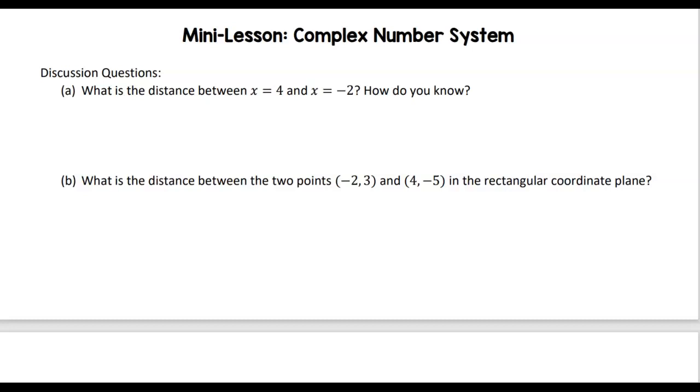So let's just start basic here. If I wanted to figure out the distance between 4 and negative 2, I might draw this on a number line. Here's negative 4, here's 2, and I know that the length between those two would be like 6 units, right?